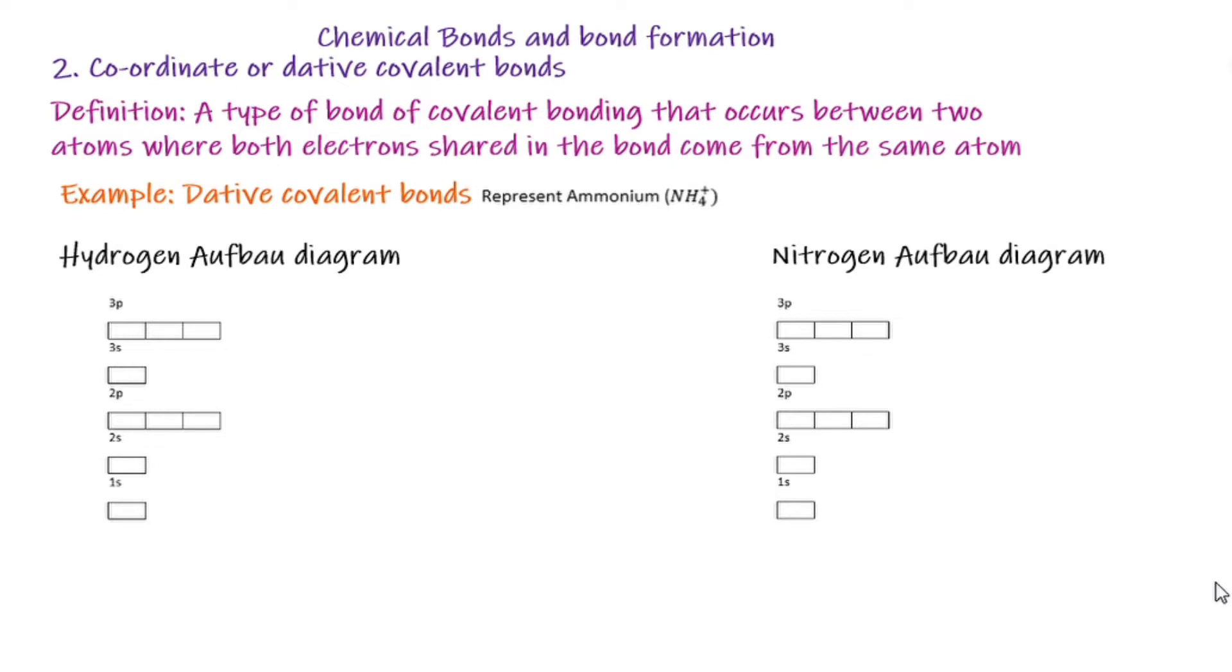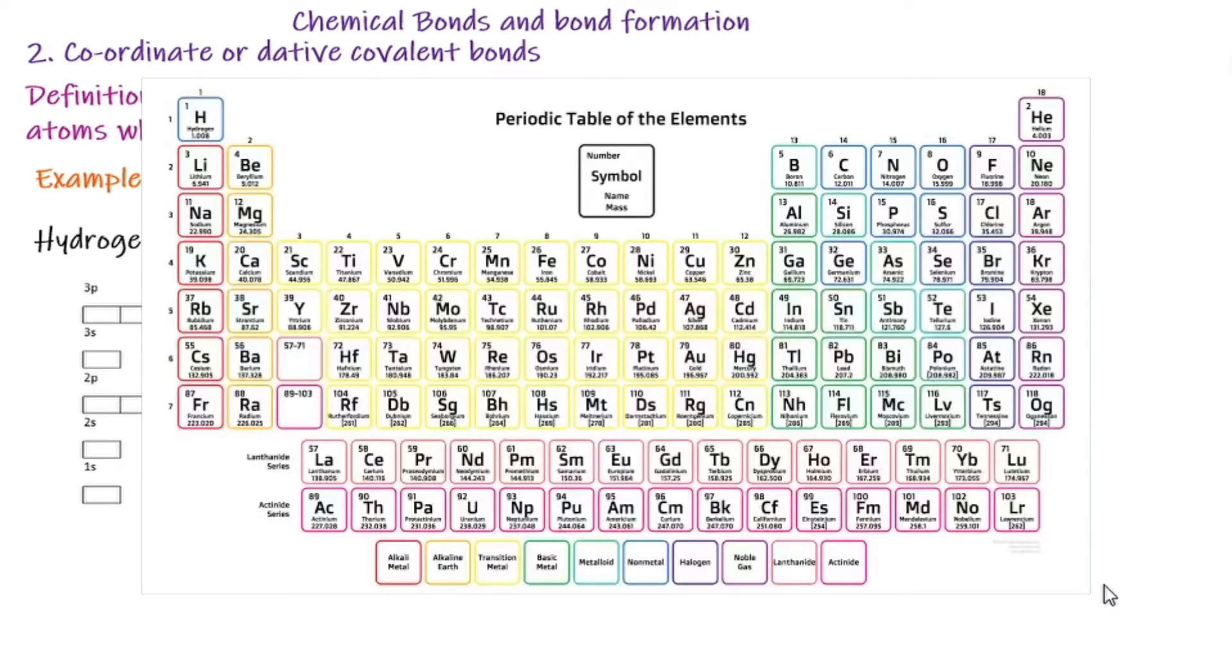A dative covalent bond example we are going to look at is ammonia. First, I'm going to make use of the aufbau diagram to find my valence and core electrons. Let us fill the aufbau diagram for hydrogen. If you open the periodic table, you'll notice that hydrogen only has one atomic number and it's found in group one.